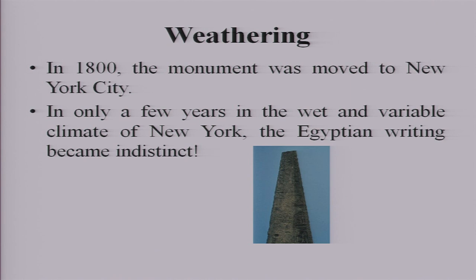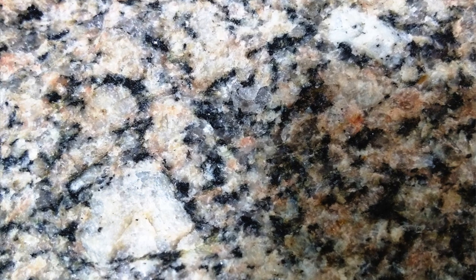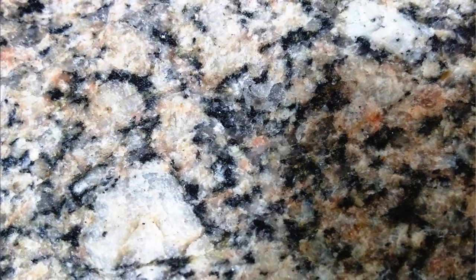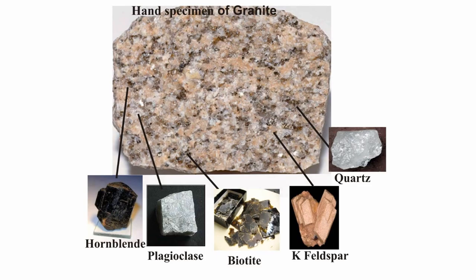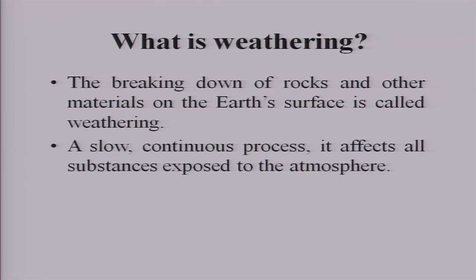Can you tell me why this happened? This monument is made up of a tough rock called granite, which is hard and crystalline. Though this is a tough rock, due to exposure to the atmosphere it gets altered — for example, some of the minerals get changed to clay and chips and flakes of minerals break away from the granite surface.